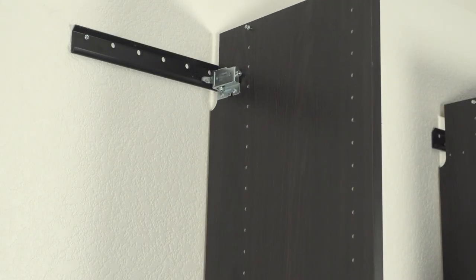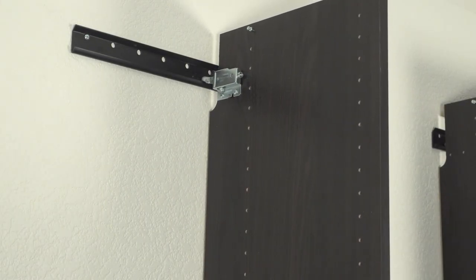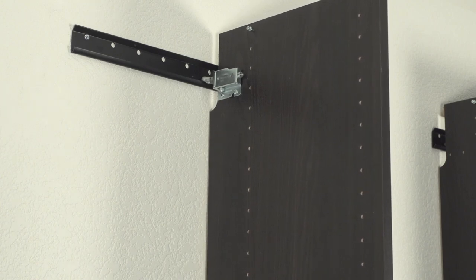Lift and hang both uprights onto the hang rail. The uprights must hook into the lower rail of the hang rail as shown.